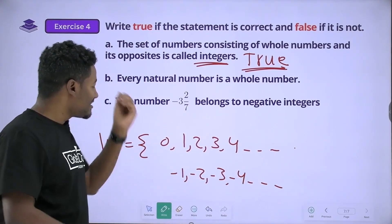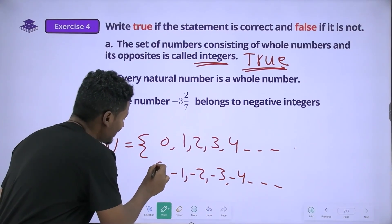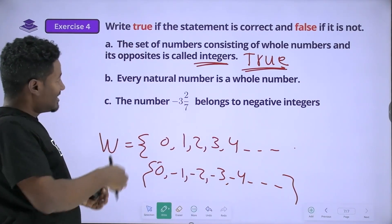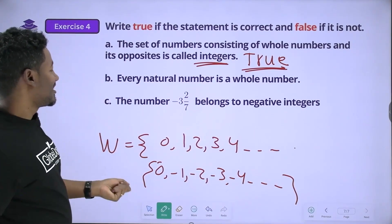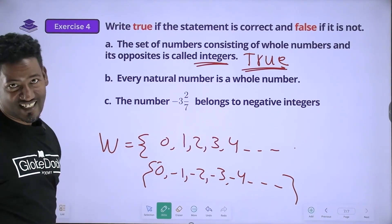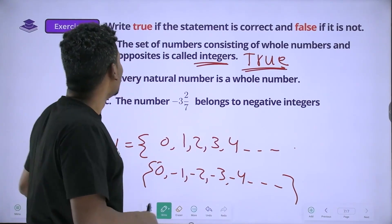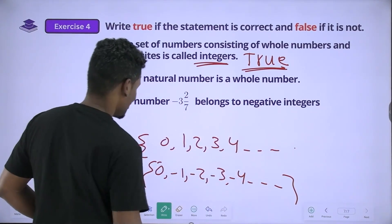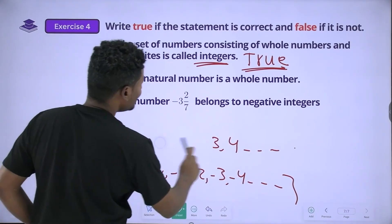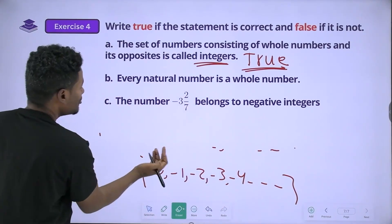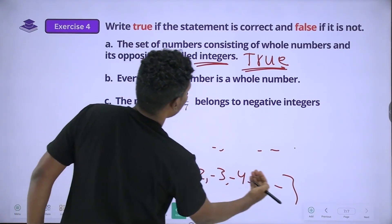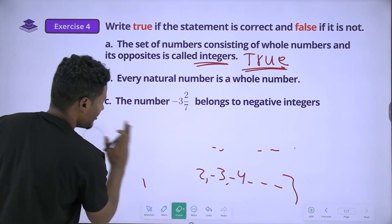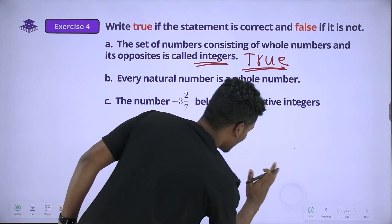If you have a union, then you can see that zero is included. If you have a union, then you can have an integer. Integer is an integer. Every natural number is a whole number — this is true.